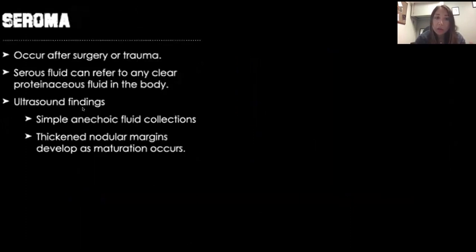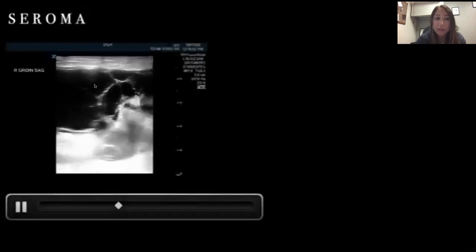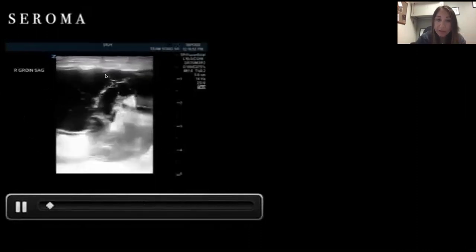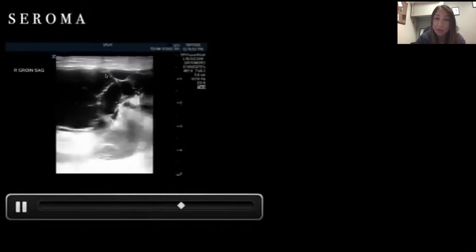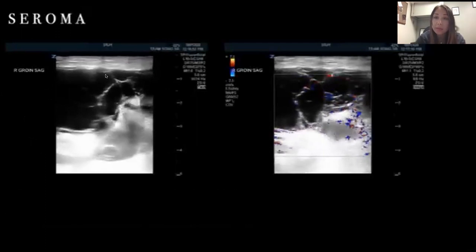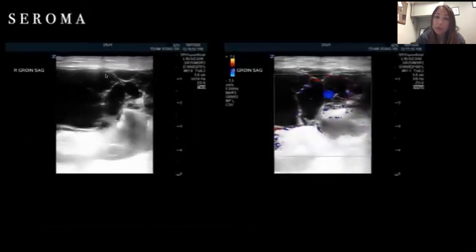Seromas usually occur after surgery or trauma. They're made of serous fluid and can refer to any clear, proteinaceous fluid in the body. On ultrasound you'll see anechoic fluid collections, and as they mature you can have nodular margins — it's not clearly an abscess, but it starts developing clear margins. Sometimes you'll also have increased vascularity, so if you put color flow on it, you'll see increased flow.